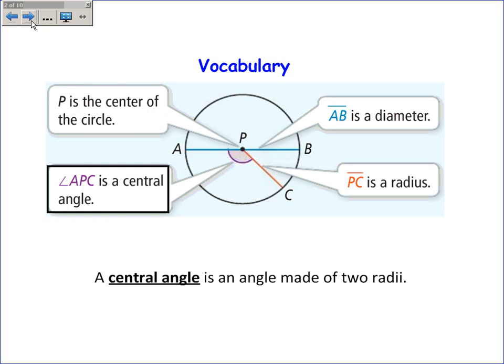Angle APC is a central angle because it's in the center of the circle. It's made up of two radii, and so it's a central angle.